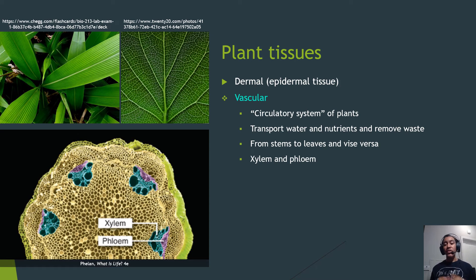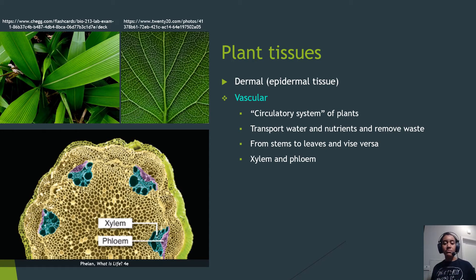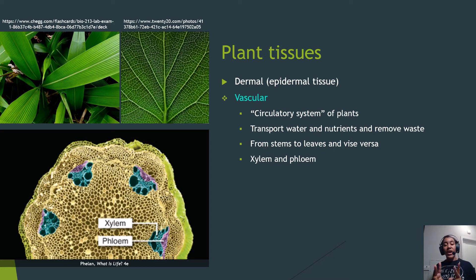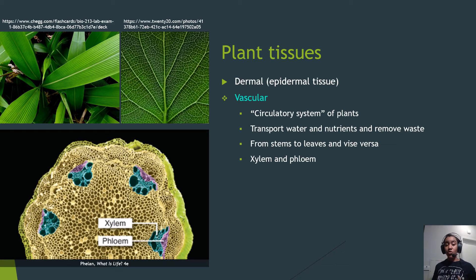The next type of tissue is vascular tissue — essentially the circulatory system of the plant. They don't have a heart, but they have tube-like structures that transport nutrients and water throughout the plant and also remove waste. We have two types: xylem, which runs from roots to shoots, and phloem, which runs from shoots to roots.